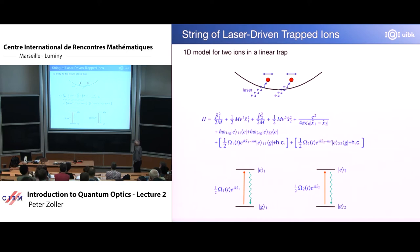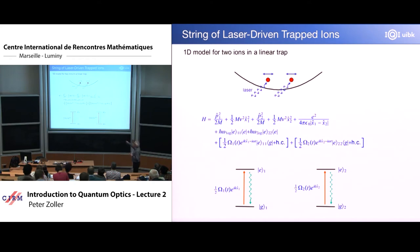We can speed up a little bit because all of the things we said about single ions is very easy to write down for N. When I tell you that we have a Hamiltonian, first for the motion: you can see this is the first ion in its harmonic oscillator corresponding to this harmonic trap. This is the second ion, again moving in the harmonic oscillator.